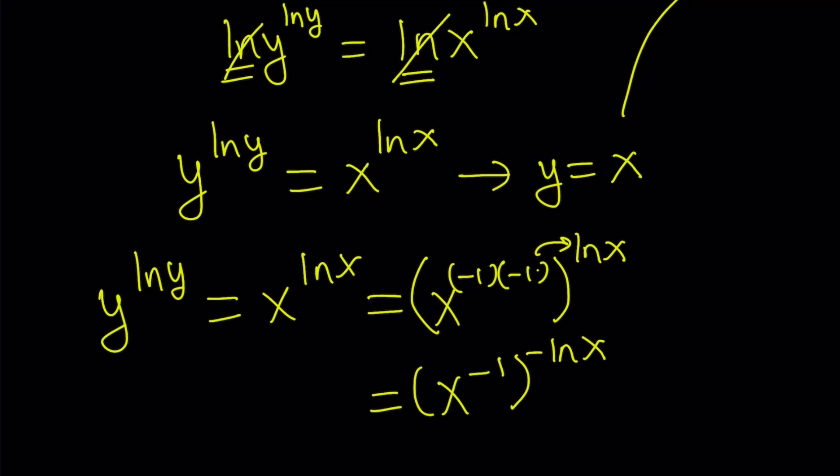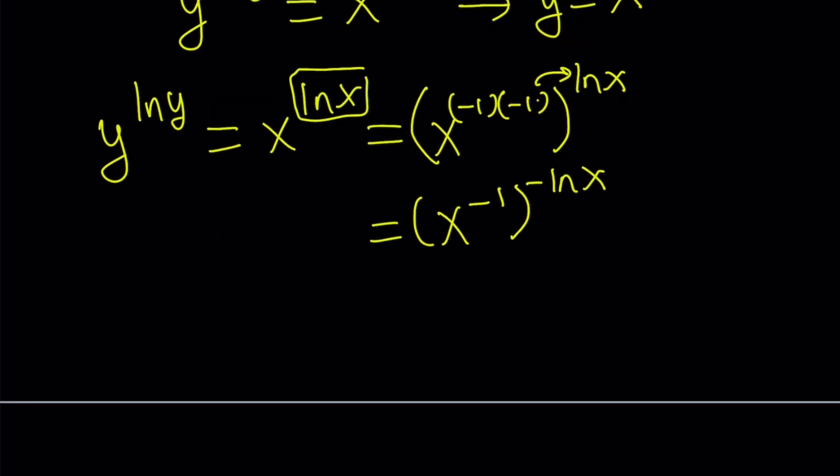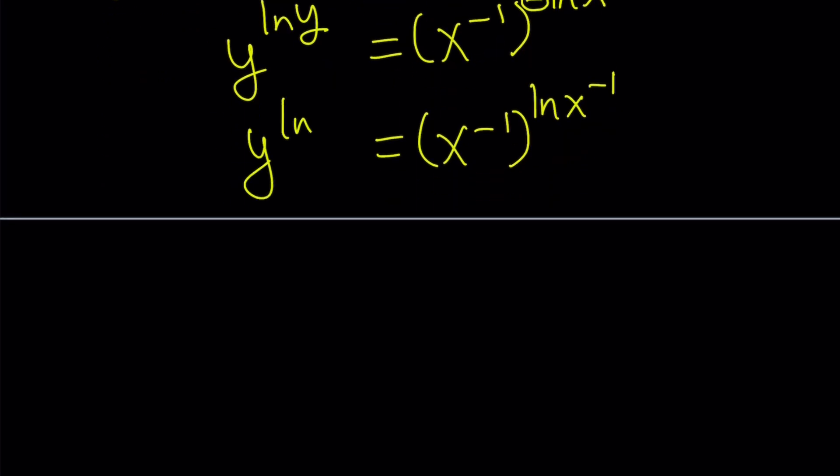In other words, if you multiply -1 times -ln(x), you get ln(x), which is what we have here. So they check. Okay, but why is this useful? This is helpful because this -1 can be made an exponent again like before. So we can write it as (x^-1)^ln(x^-1). And that's awesome because now this gives us another equality where y equals x^-1 or 1/x.